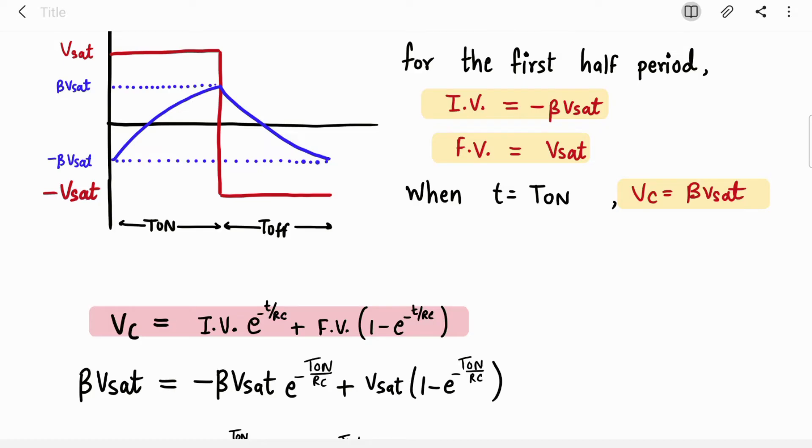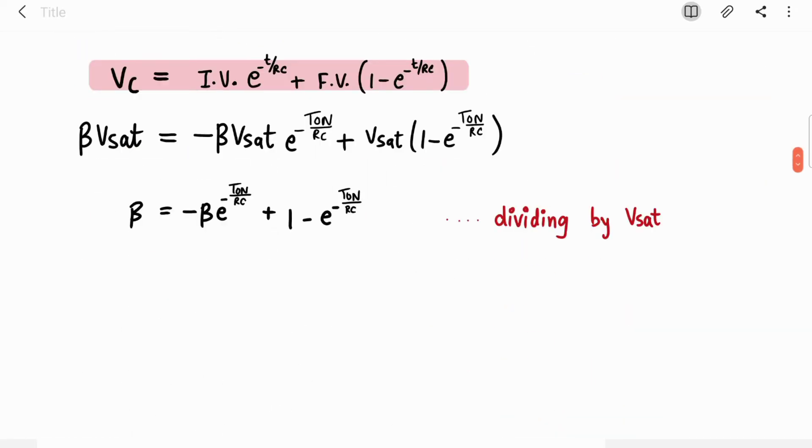I have just substituted these values. Now we are going to simplify it quickly. You can see Vsat is common in all the terms, so divide by Vsat on both sides. Vsat will disappear from each term and you will get beta equal to this first term without Vsat and this bracket. Now I am just collecting this minus 1 and this minus beta in a bracket because it is common, just rearranged it.